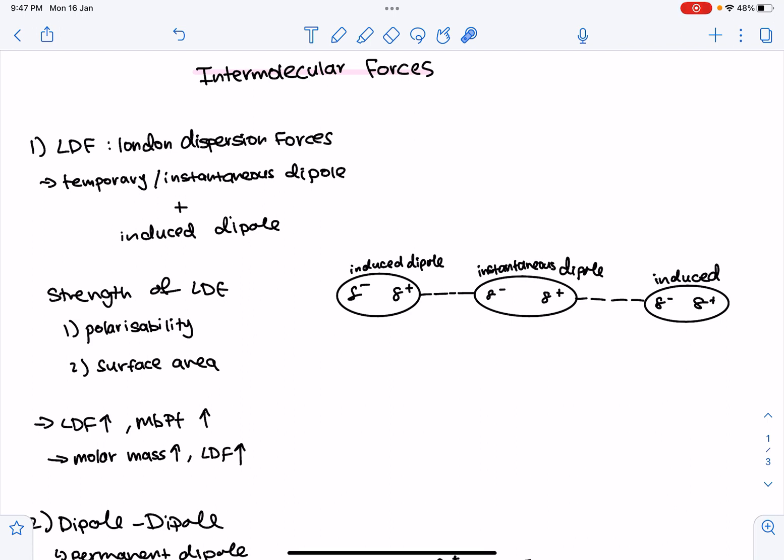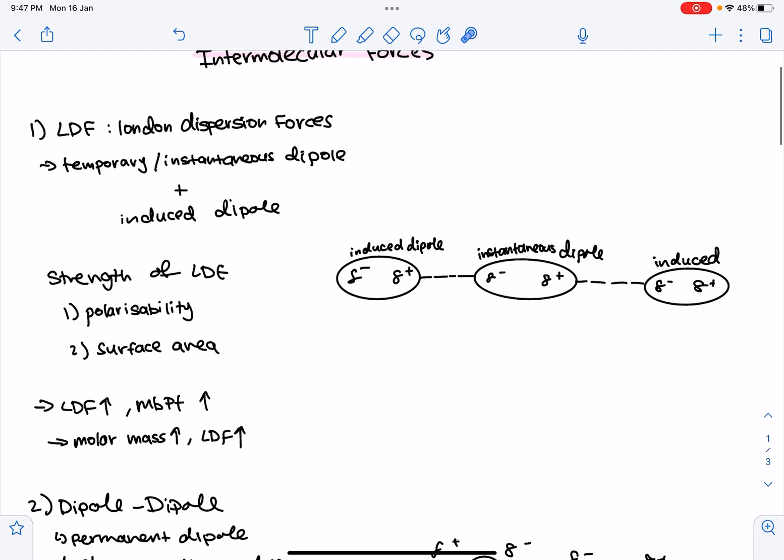Generally, as the molar mass of a molecule increases, so does the polarizability, which results in a larger temporary or induced dipole being formed within the molecule, which leads to a stronger LDF. As the LDF between molecules increase, the boiling point also increases, because as the strength increases between the molecules, we can see that down the group, the boiling point increases.